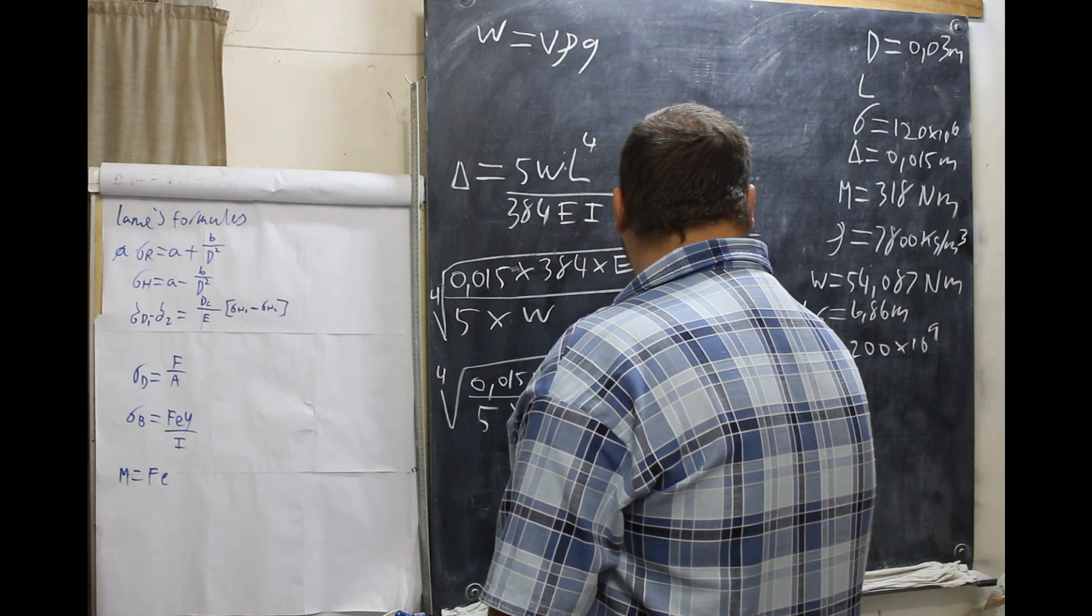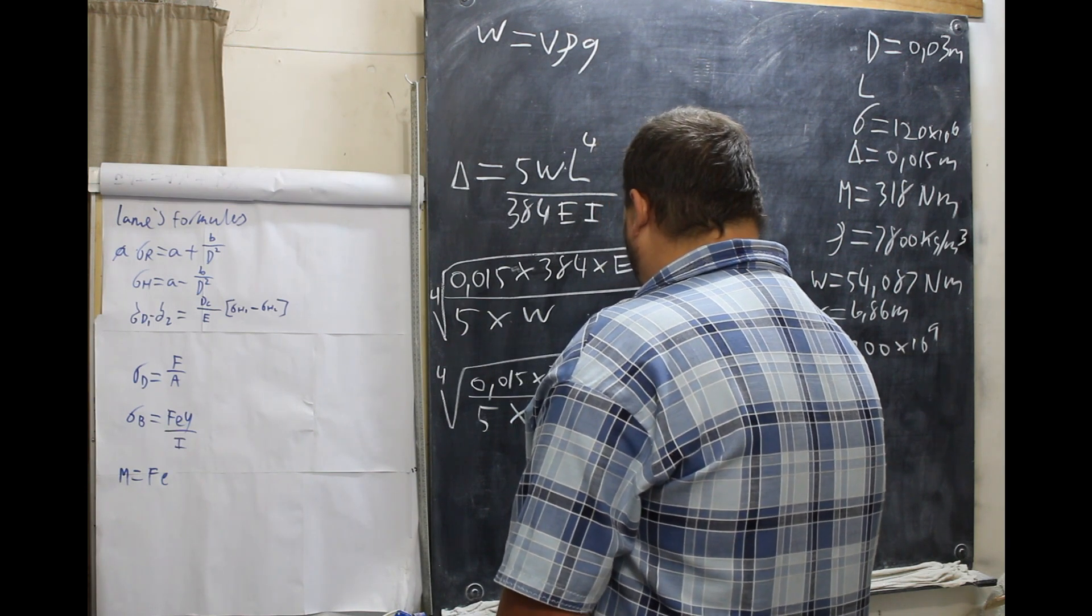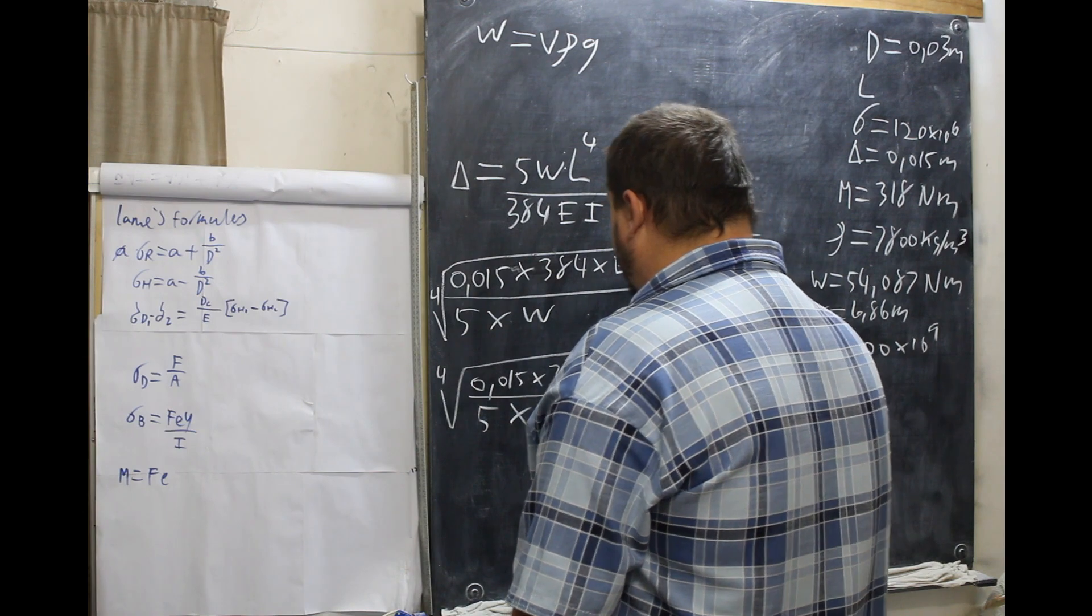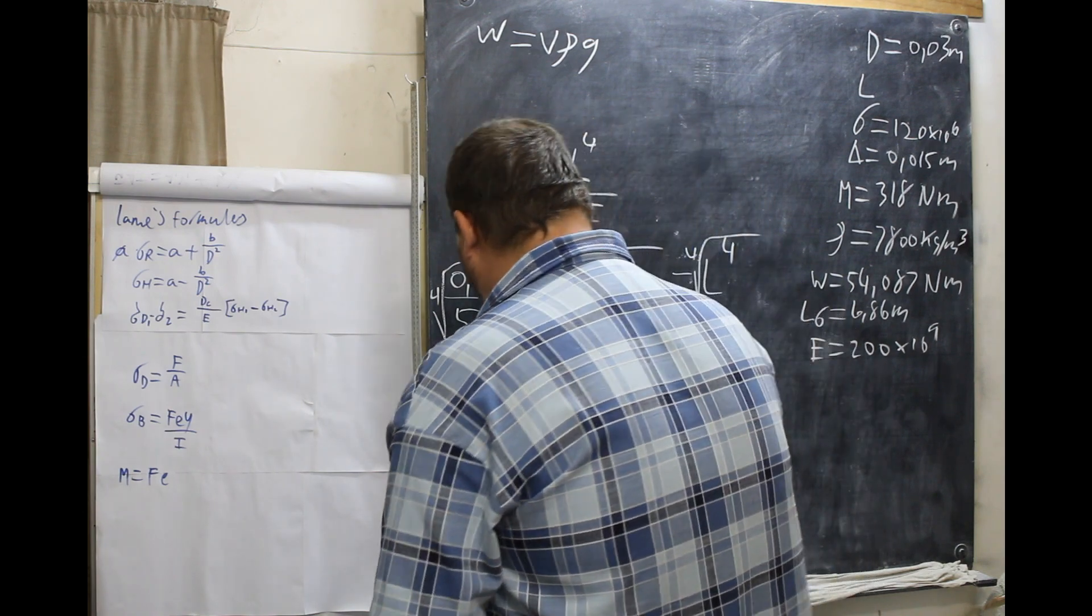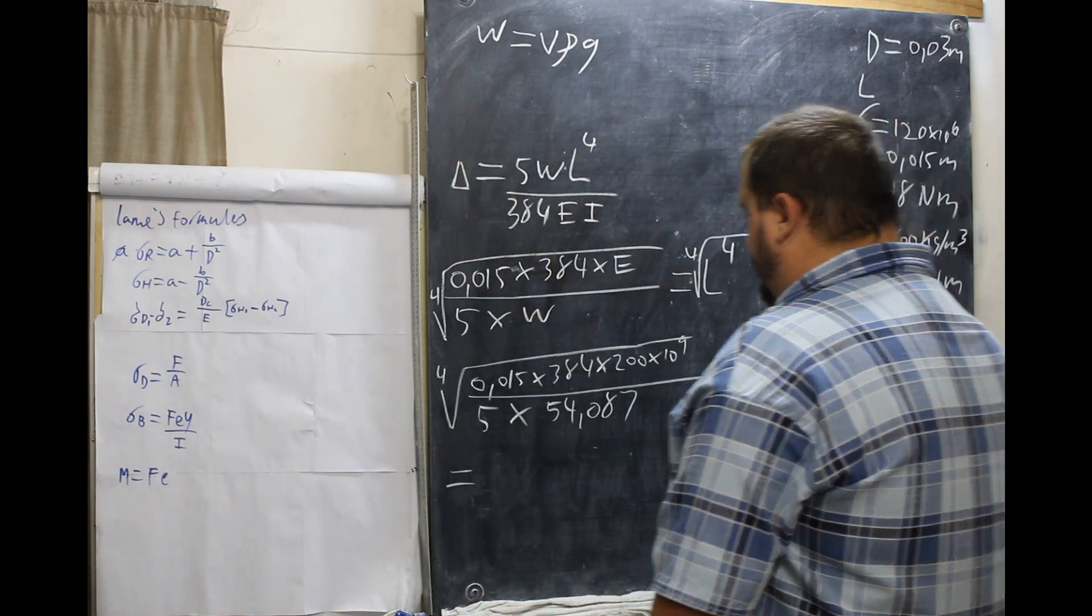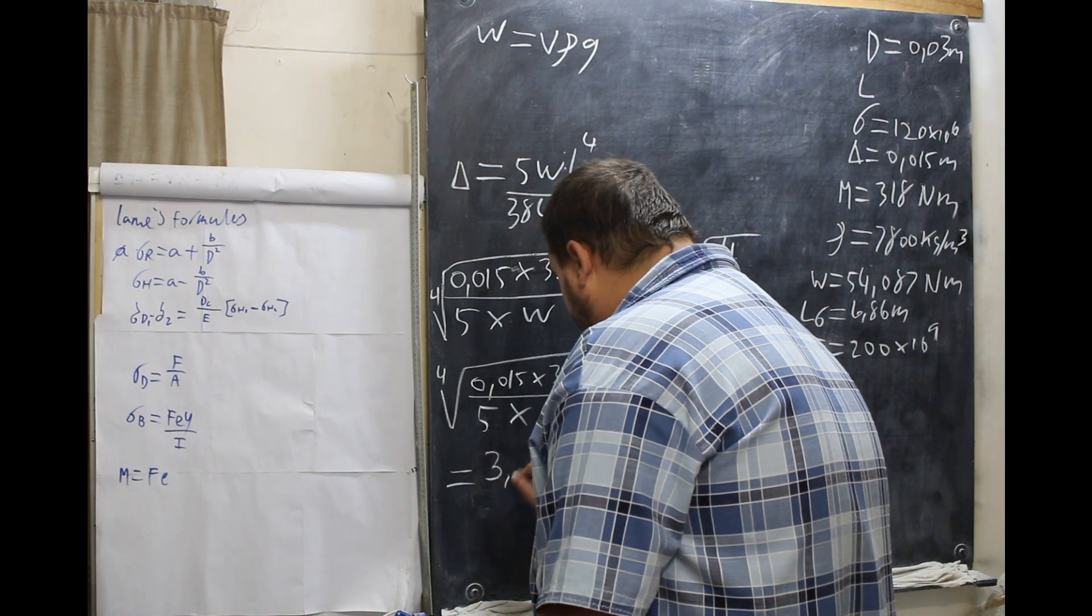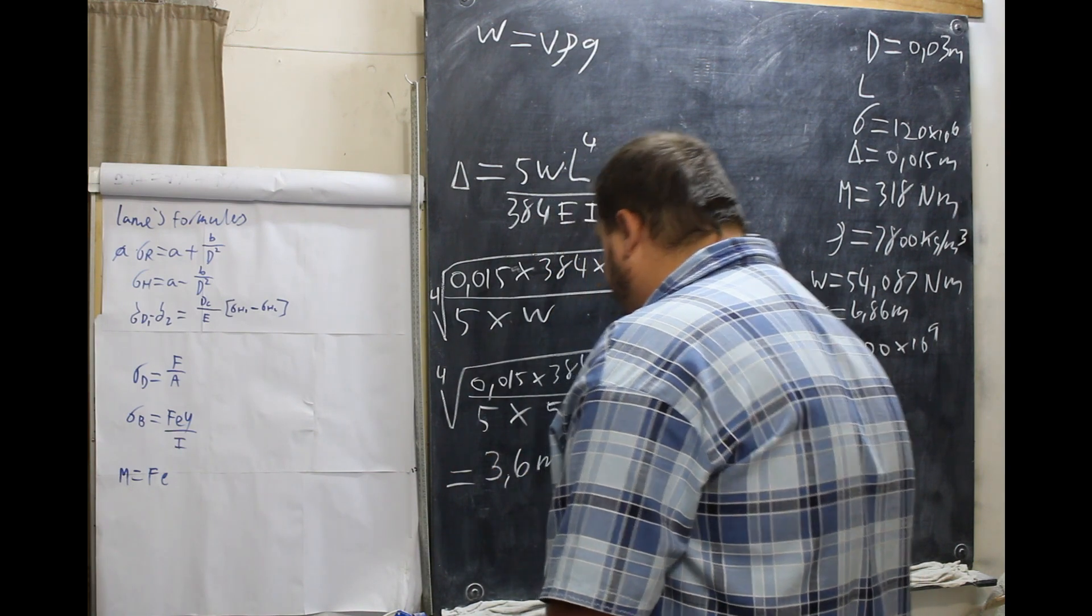Now let's put our values in. 0.015 equals 54,087. And this equals 3.6 meters.